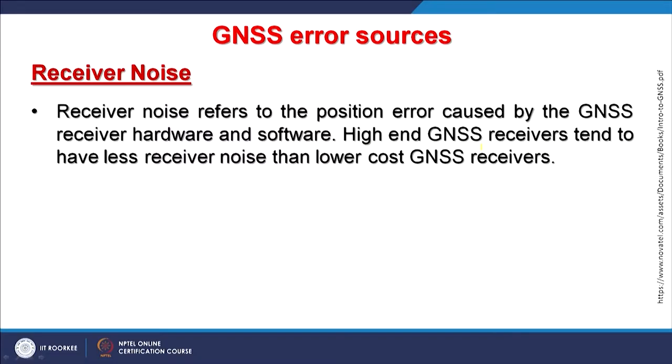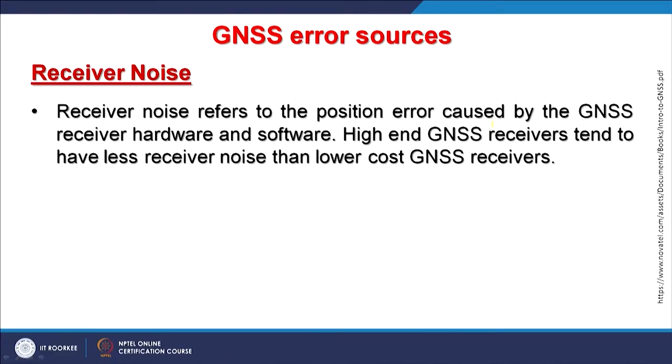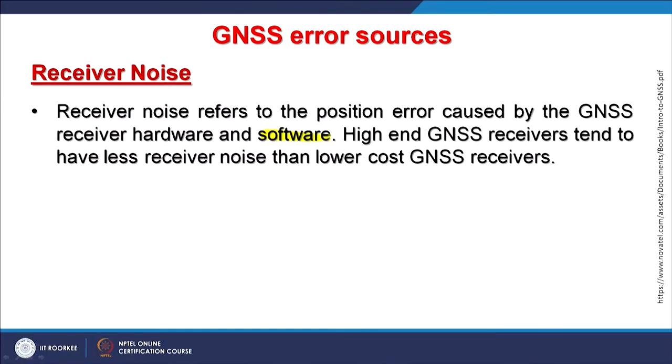Another source of error is receiver noise. Within the receiver, electronic components may produce noise that brings errors into our position estimation. Noise refers to position errors caused by GNSS receiver hardware and software. High-end GNSS receivers tend to have less receiver noise than lower-cost receivers — the same analogy as with smart mobiles, where cheap electronics lead to more noise and heating. If software is creating a systematic problem and it can be detected, it can be removed to improve position estimation.